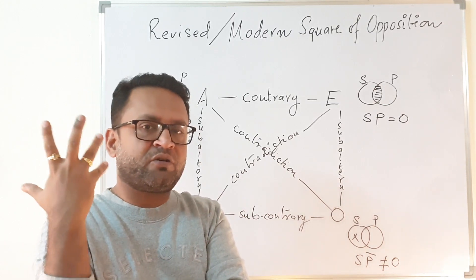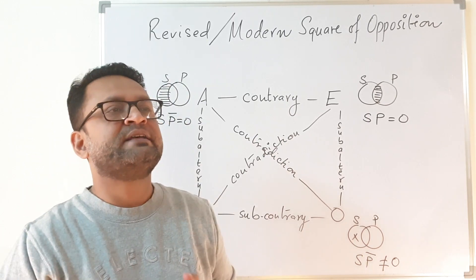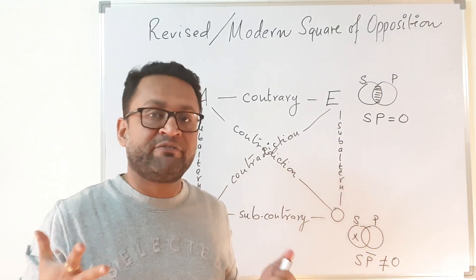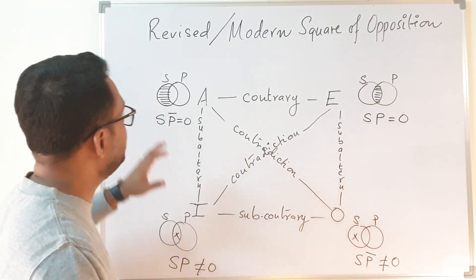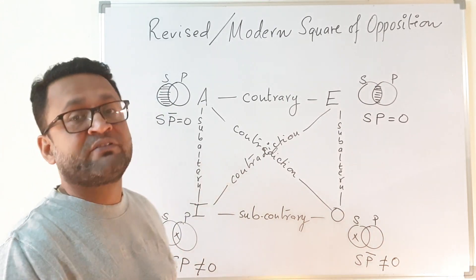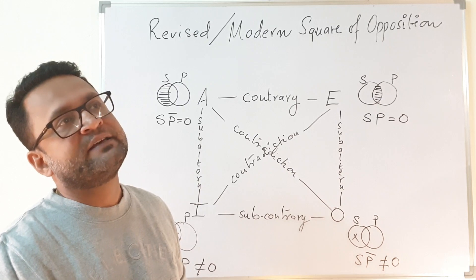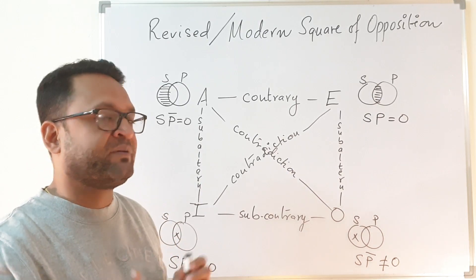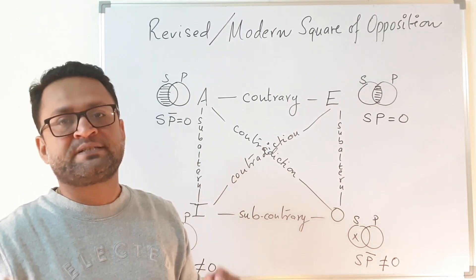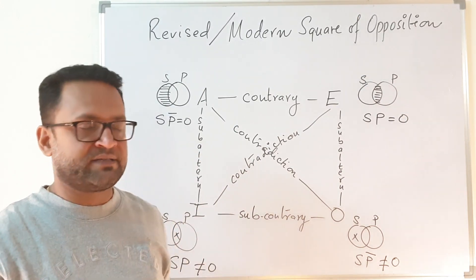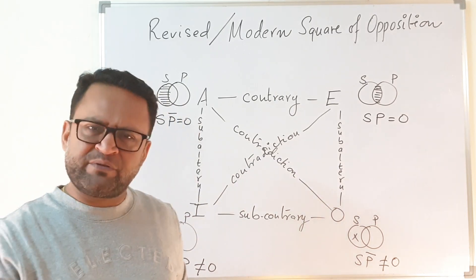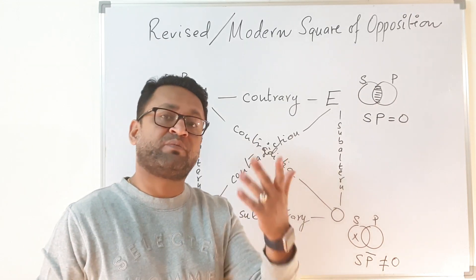The traditional Aristotelian understanding says that existential import lies with affirmative propositions. So whenever we say 'All S is P' or 'Some S is P' — these are affirmative propositions — the traditional import was with the affirmative proposition, meaning we are committed to the existence of objects in the subject class. But when modern logic came, it said that something can be vacuously true — universal propositions are vacuously true.